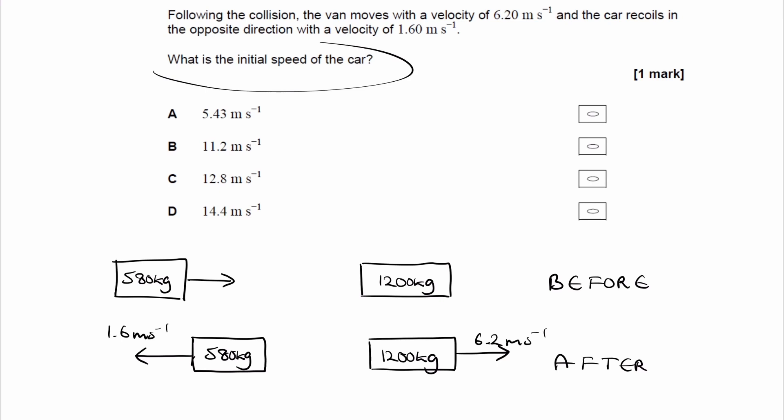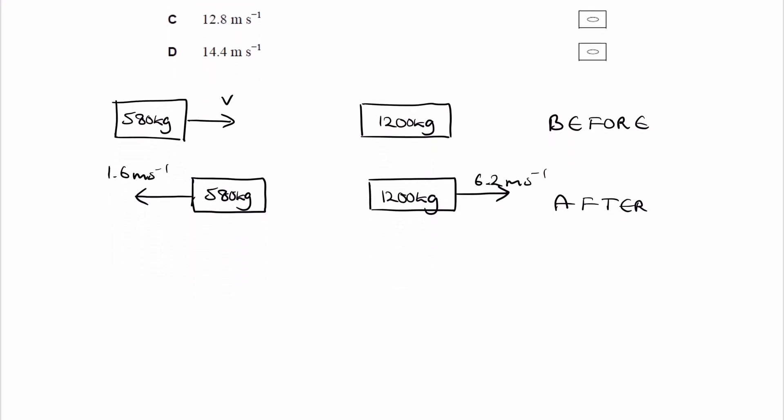And then we're trying to work out the initial speed of the car, so I'll call that v. So to do this question we have to consider momentum conservation. The momentum before a collision should be equal to the momentum after a collision. Now momentum is a vector, so we have to define a positive direction. Let's say to the right is positive.